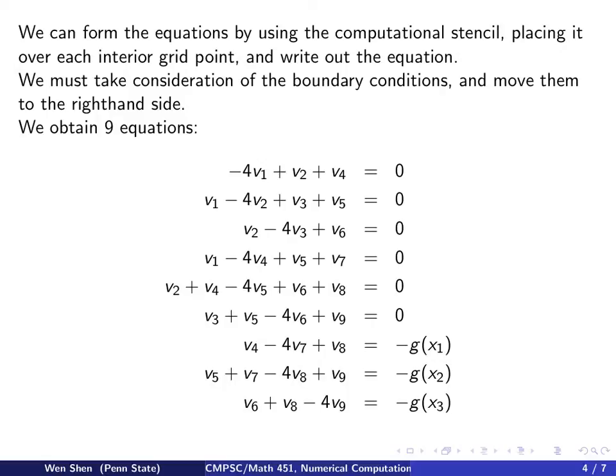We have nine equations. The first one, placing the stencil center at v₁, we see that it touches v₂ and v₄ as interior points, and it touches two boundary points, which we have boundary conditions 0. So moving them to the right-hand side, it's 0.